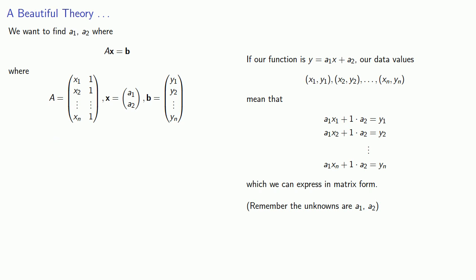And so this seems to be a fairly simple matrix equation. We want to find a1, a2, where Ax equals b. Unfortunately, this is generally impossible. We have too many equations and not enough unknowns.